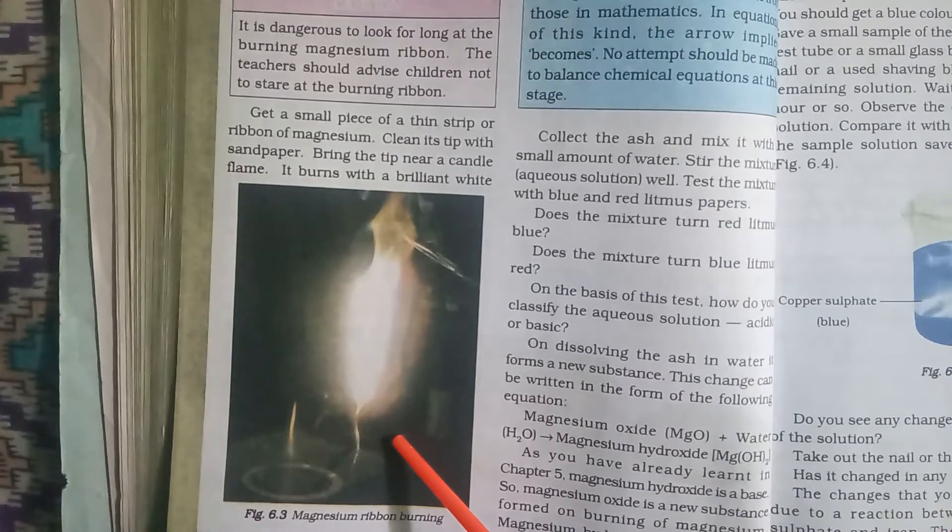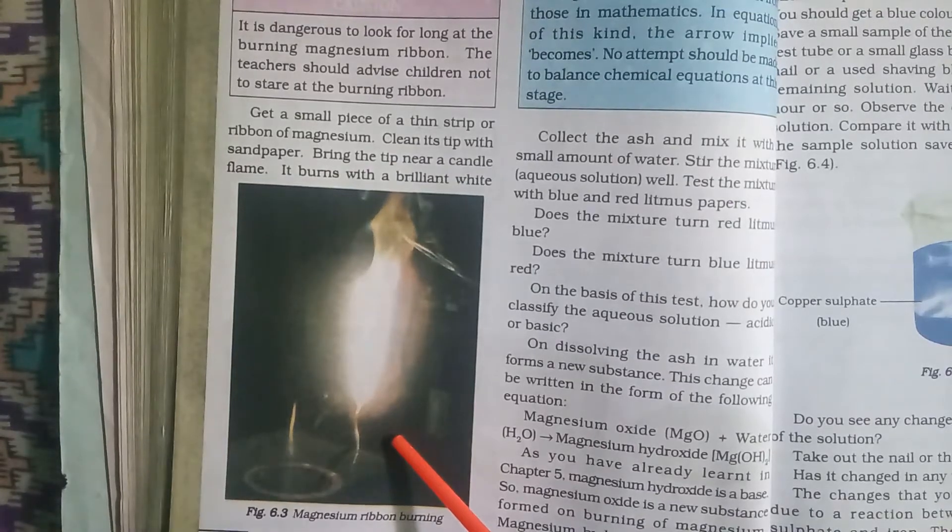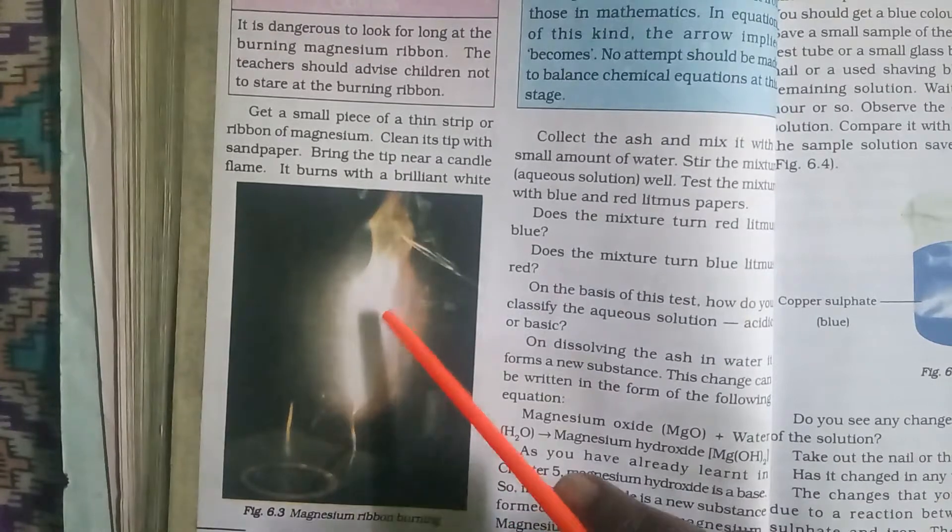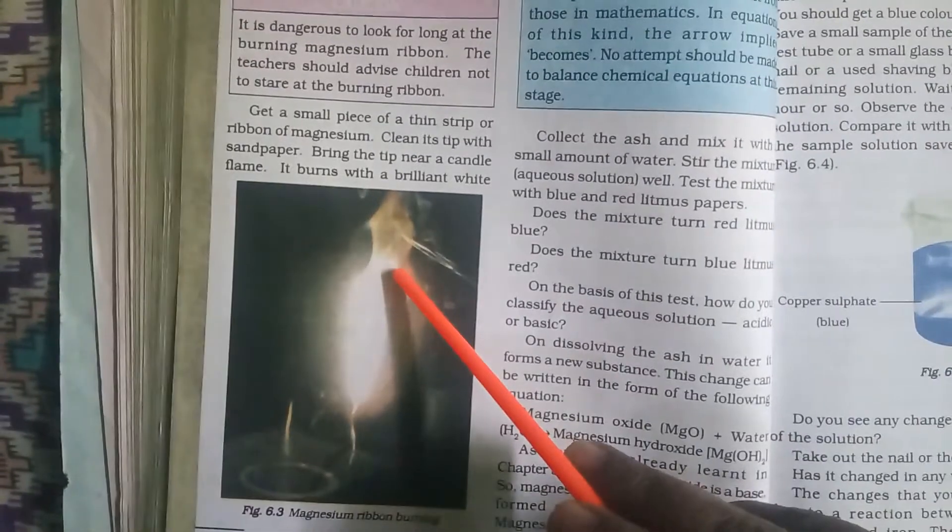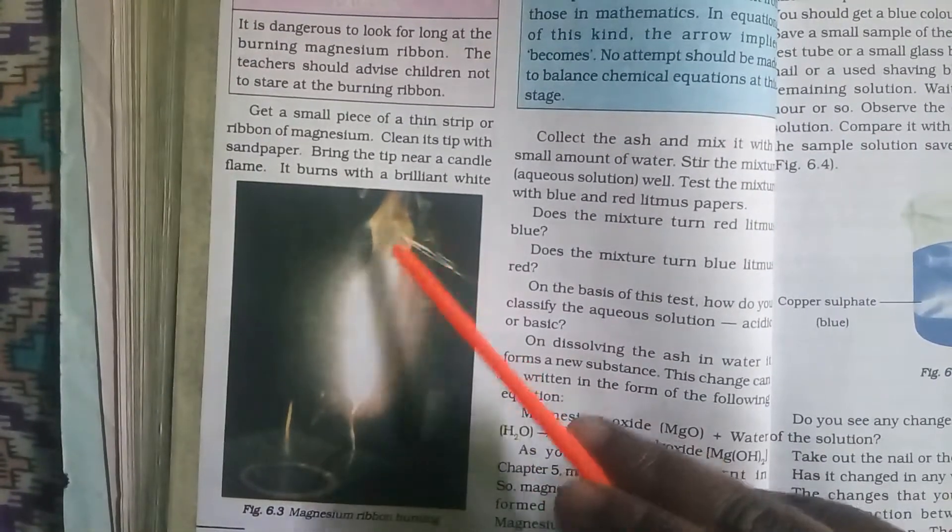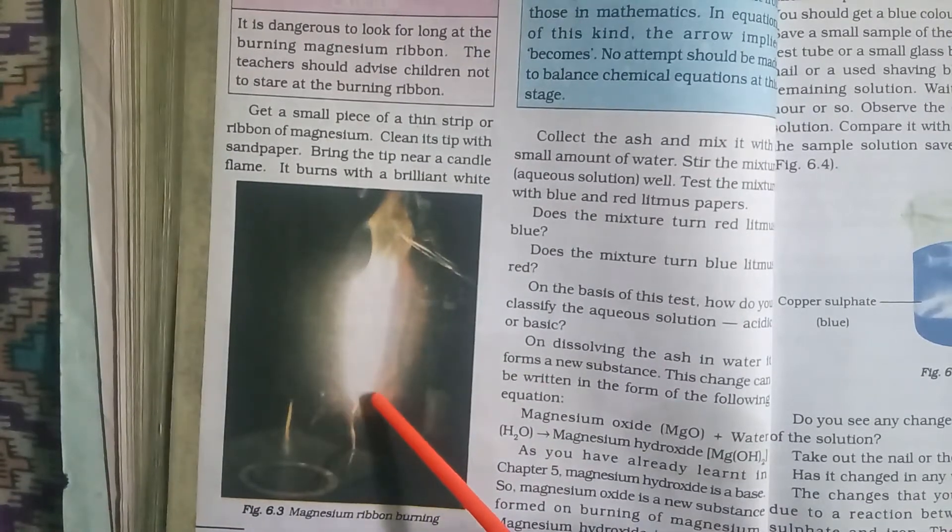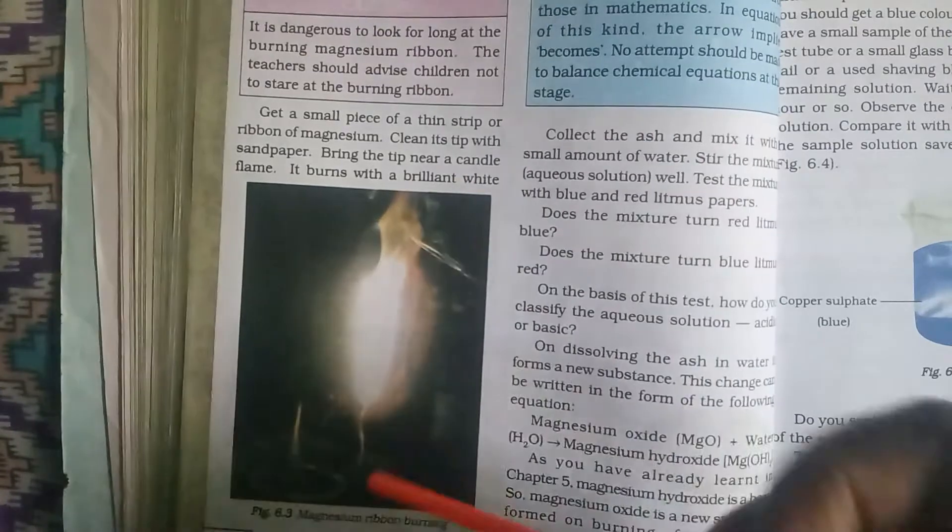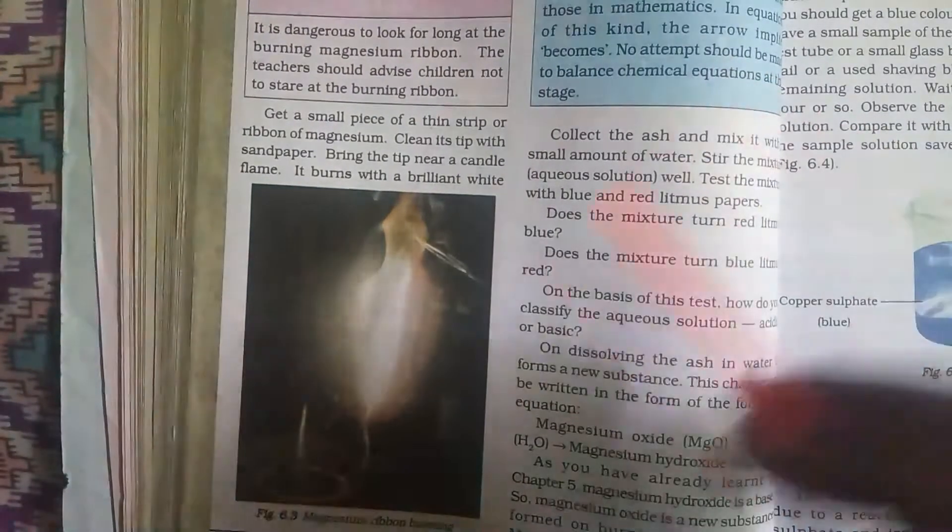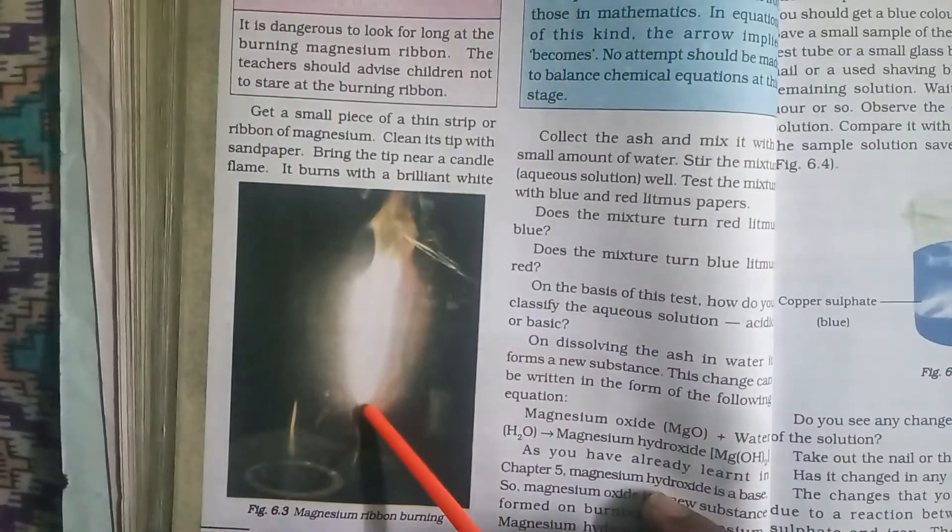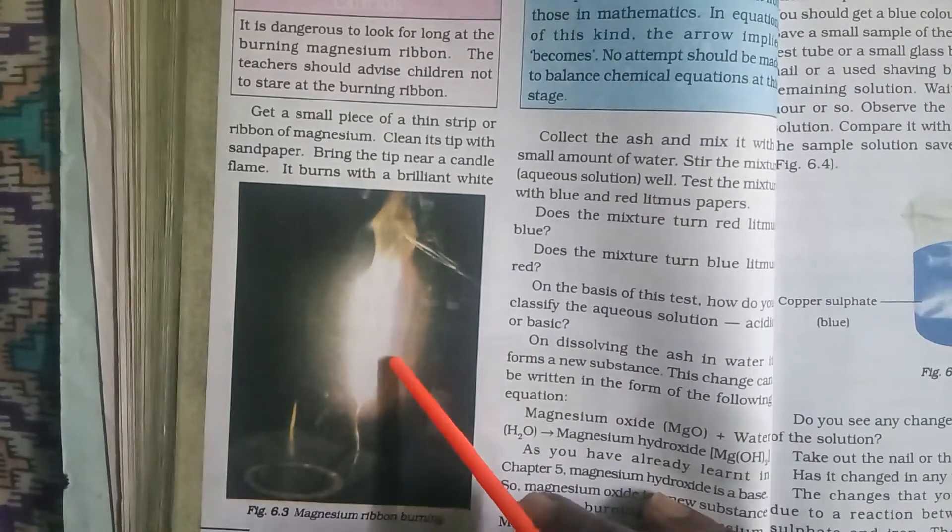We can collect it to see what product it is. Once the ribbon is completely burnt, you can see the white powder-like structure which will be formed. That powder form is called magnesium oxide.